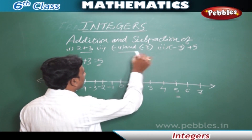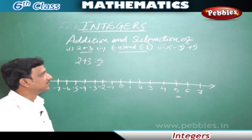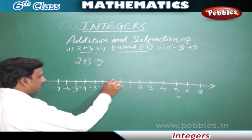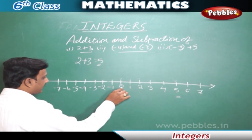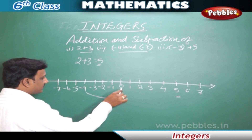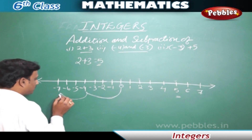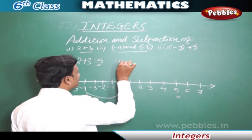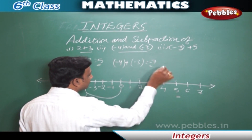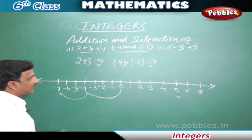The second example: minus 4 plus minus 3. This is the addition of two negative numbers. On the number line from 0, we move to the left side — first four positions to minus 4, then three more positions to the left. We reach minus 7. So minus 4 plus minus 3 equals minus 7.